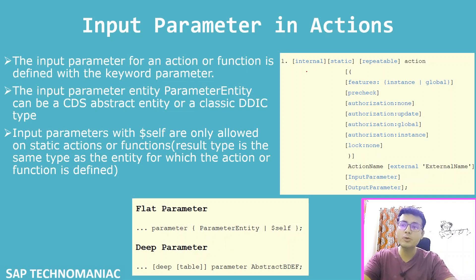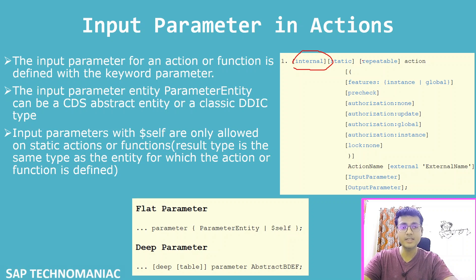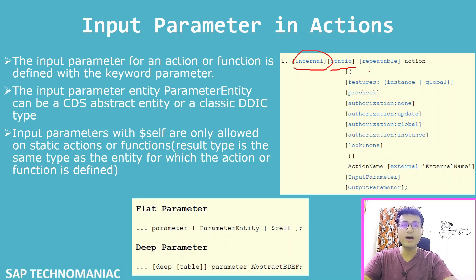This is the syntax we use to define the action. First, if your action is internal, you have to declare it as internal. By default, all actions are instance. If you want to define a static action, then you have to use the static keyword. And if you want your action to be repeatable, you have to use the repeatable keyword.